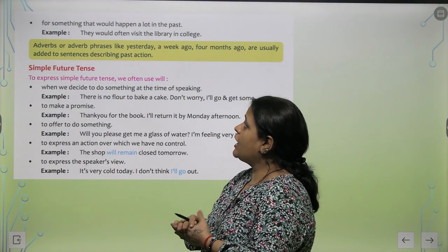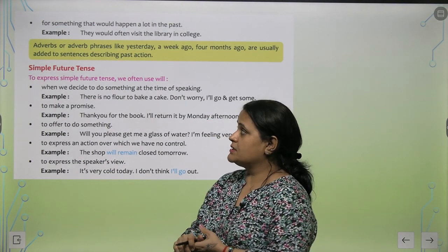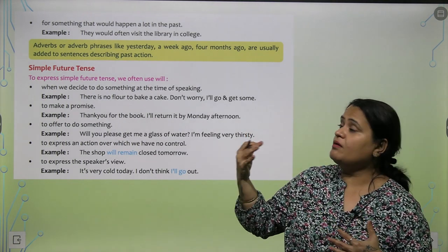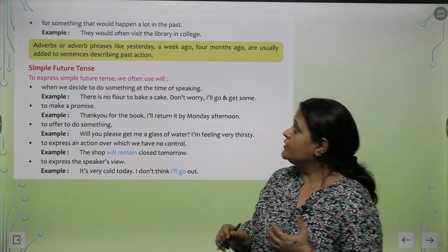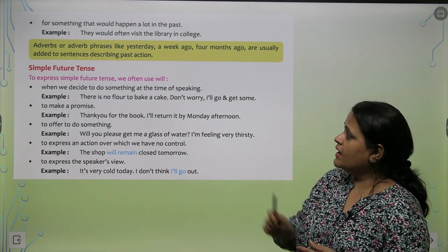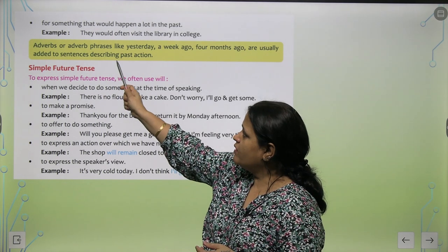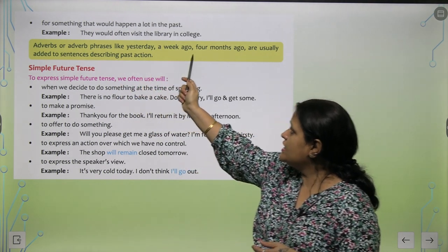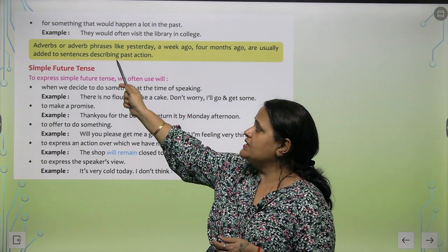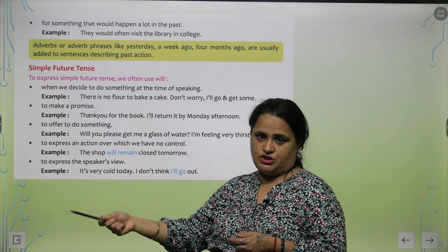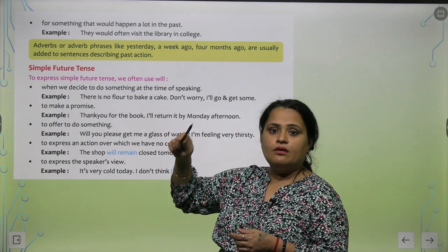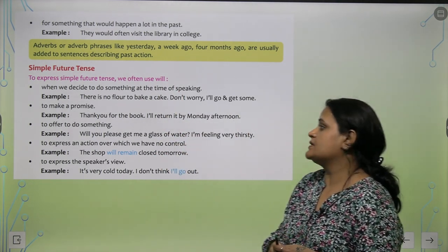For something that would happen a lot in the past — us chiz ke liye jo past mein bahut zyada hua hai — jaise, 'They would often visit the library in college.' Now, adverb or adverb phrases like yesterday, a week ago, four months ago are usually added to sentences describing past action.